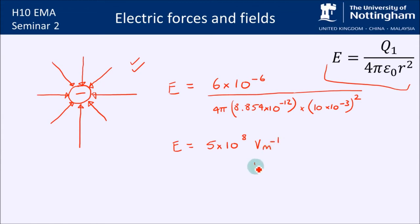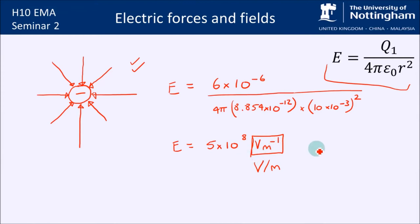You may have previously written volts per metre as V/m, but it's better scientific notation if you can do the superscript — just good practice. Remember to use your units in all EMA exams. If you fail to give the correct unit you'll lose half a mark. I won't give you negative marks, but if you've got the answer right and the unit's wrong, you'll lose that half a mark.